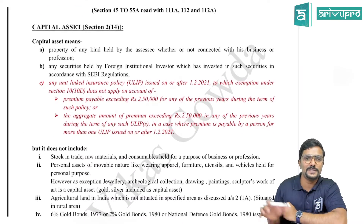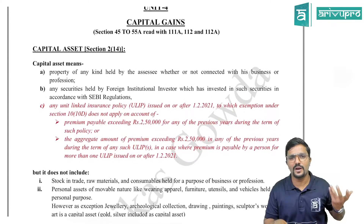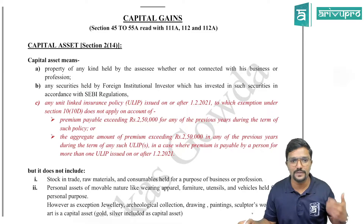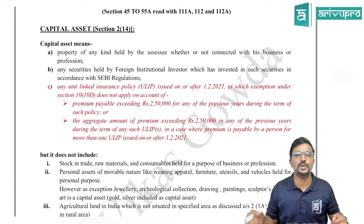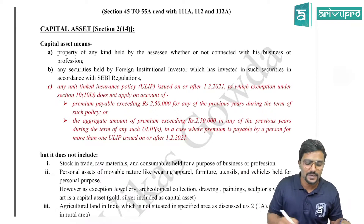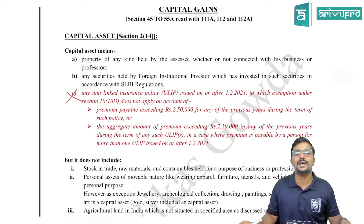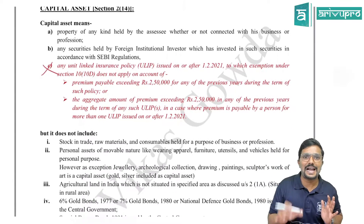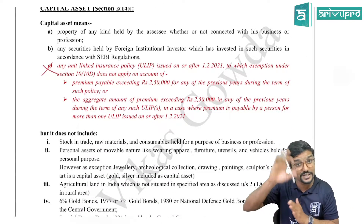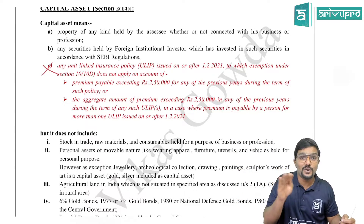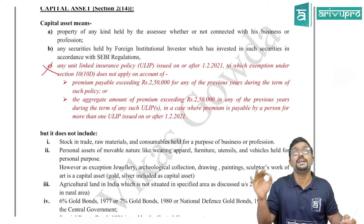So there is simply a reduction in the syllabus with respect to ULIP policy. In Chapter 4 capital gains — under Section 2(14) capital asset definition — point C was with respect to ULIP, stating capital asset includes ULIP. The institute is telling that this is not applicable for our exams. Whatever I have highlighted in red color means it is not applicable, so accordingly you can scratch this in your material.